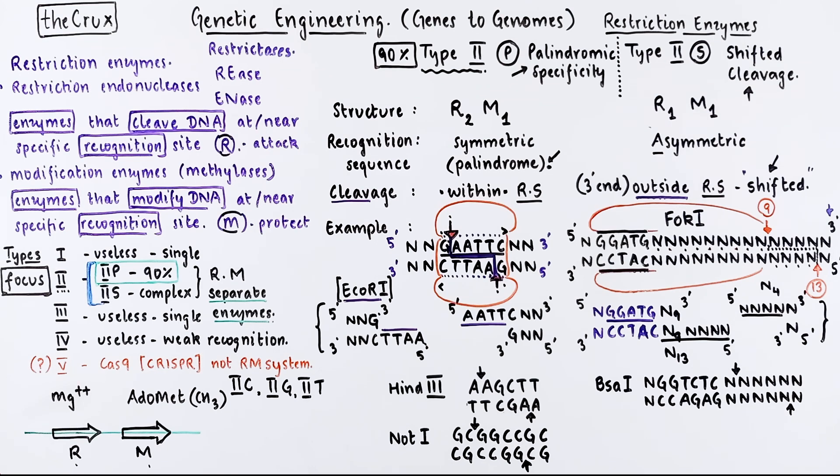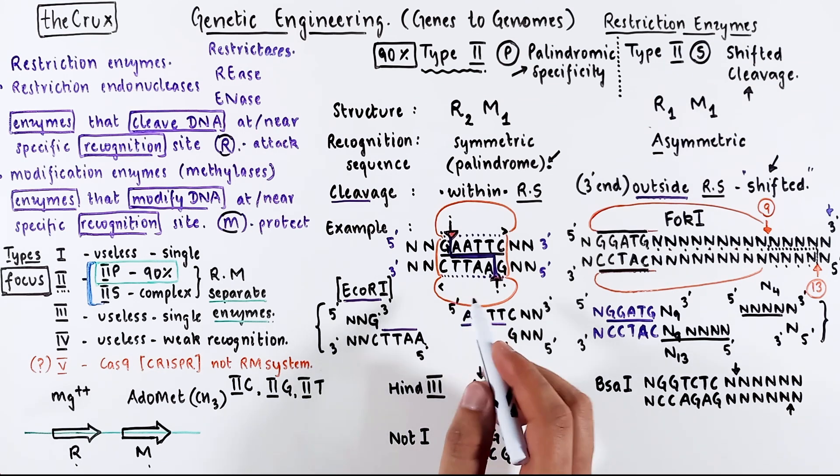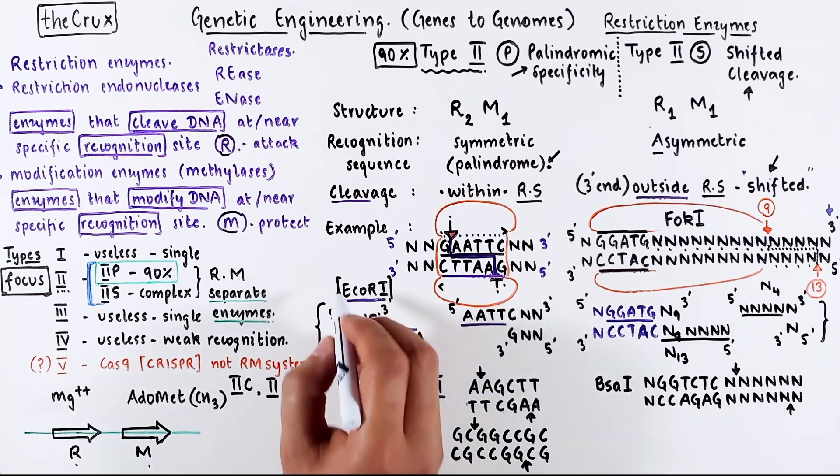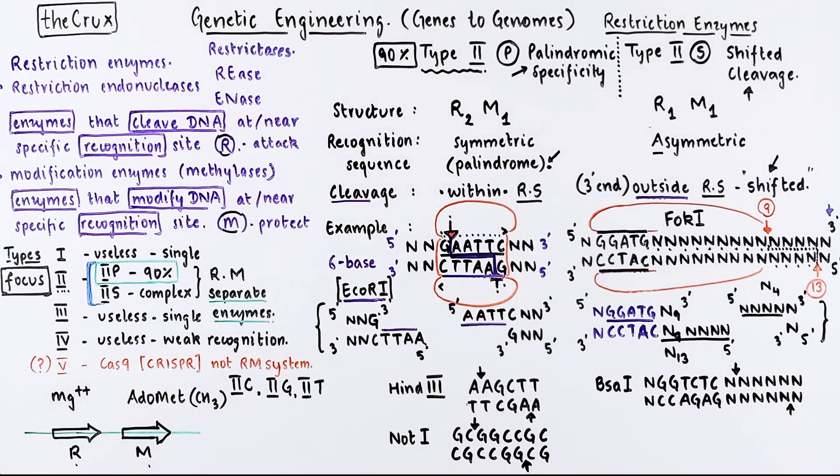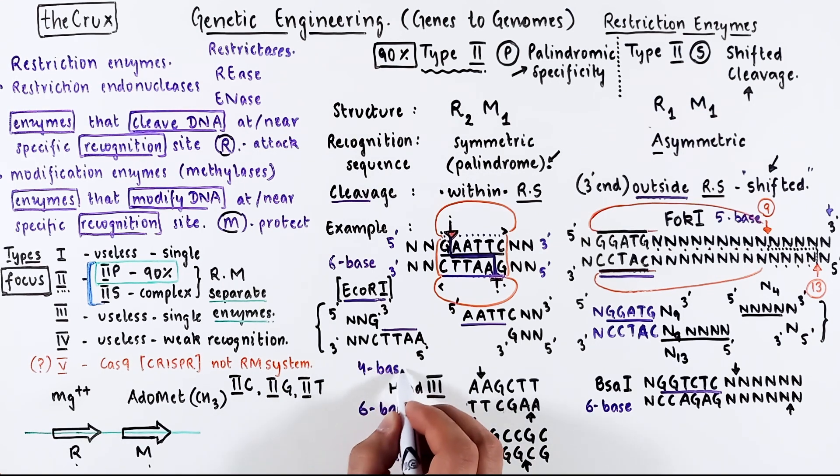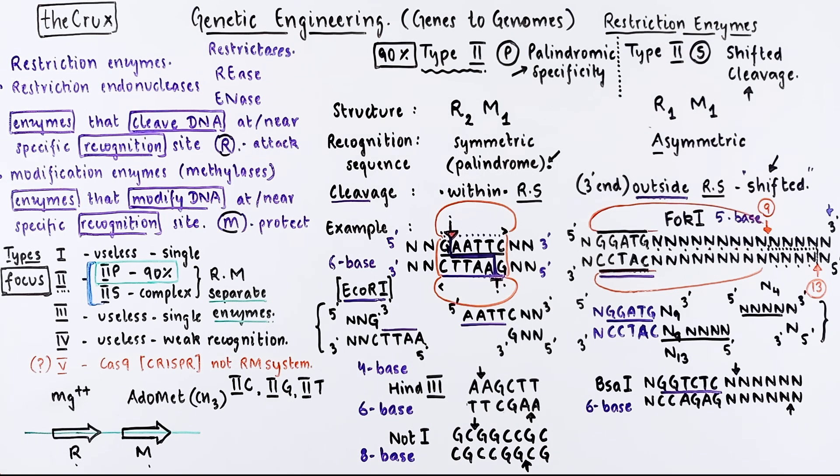Alright, a few things before we move on. The EcoR1 recognizes 6 nucleotides and for that reason it is a 6 base cutter. FOC1 is a 5 base cutter, BSA1 is a 6, HIN3 is a 6, and NOT1, if you count, is an 8 base cutter. Likewise, there are enzymes that recognize as 4 base cutter and that's as low as you can go. On the upper end, there are very few enzymes that are 8 plus base cutters. Even 8 base pair cutters are pretty rare because the longer the sequence, the probability you find this exact sequence becomes quite low. We will touch on these rare and common cutting enzymes in a later video.